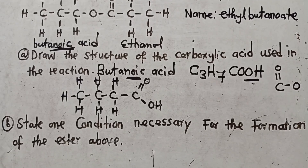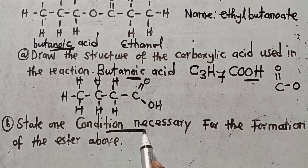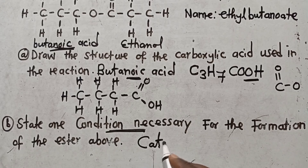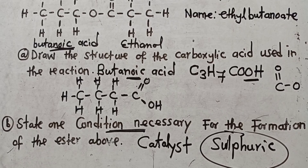We move now to the last question. The question says: state one condition necessary for the formation of the ester above. What you need to know is that the process is called esterification, where a carboxylic acid reacts with an alcohol to form an ester plus water. The condition necessary is that you need to have a catalyst, and the name of this catalyst is sulfuric acid.